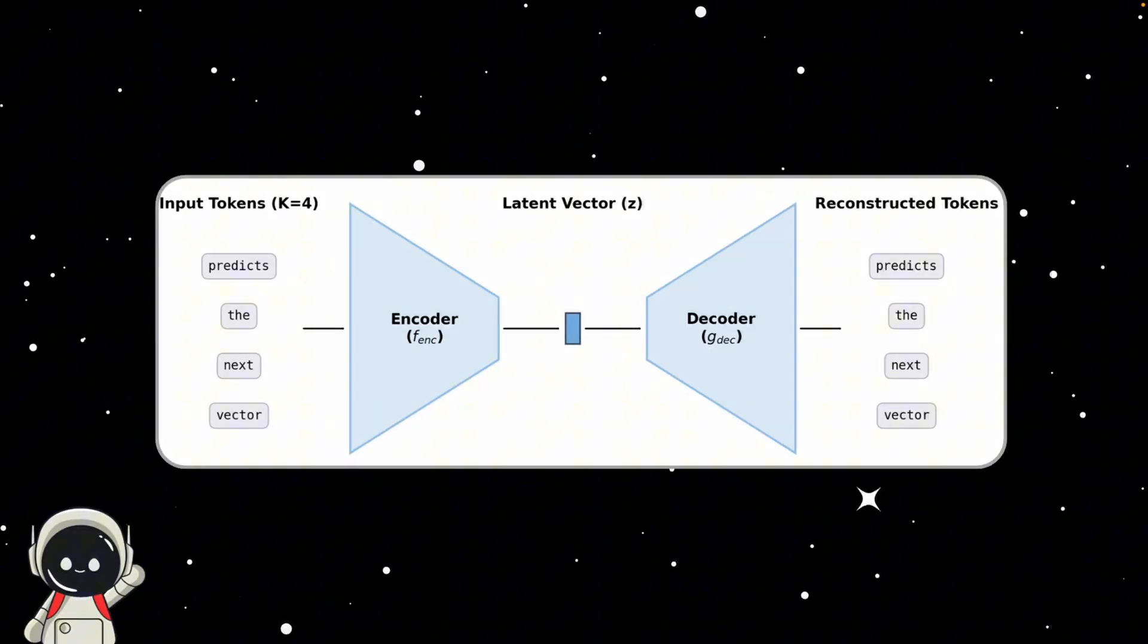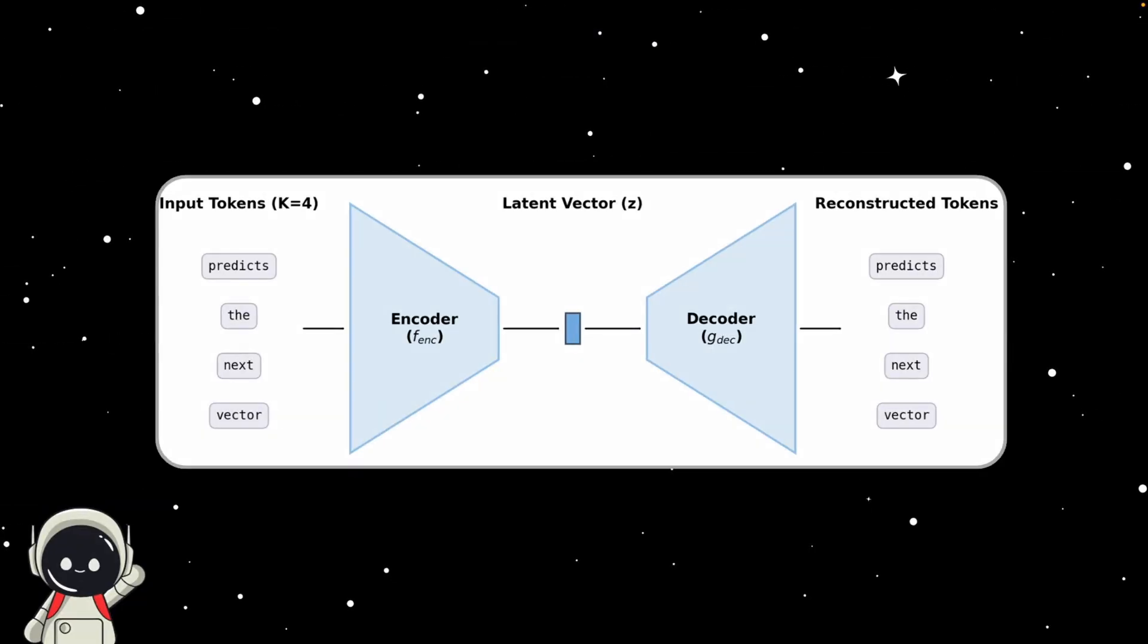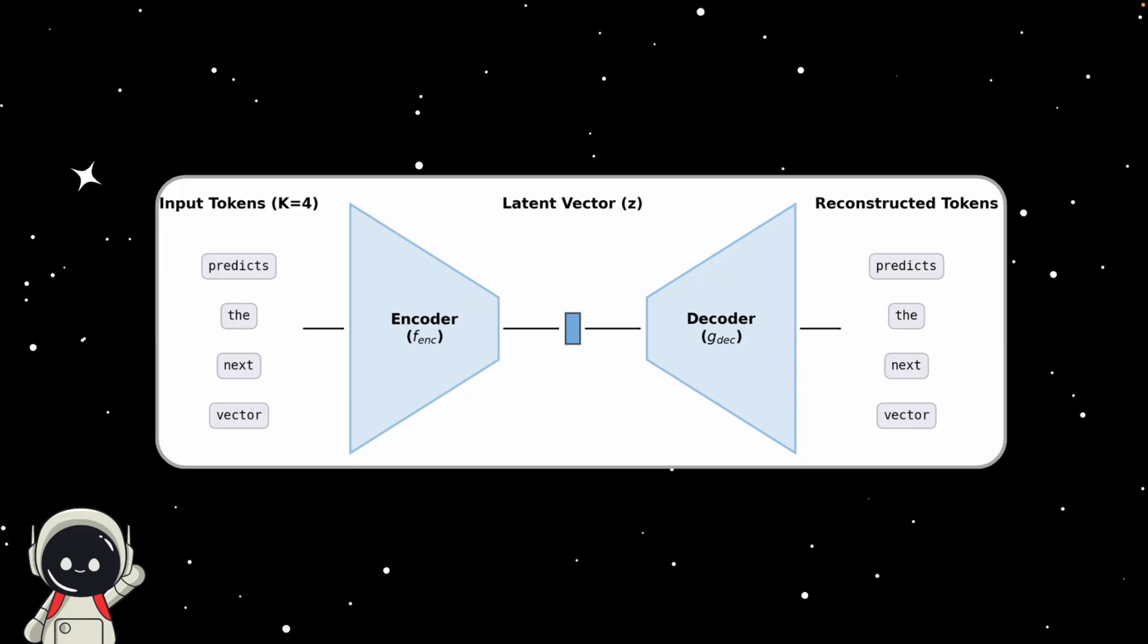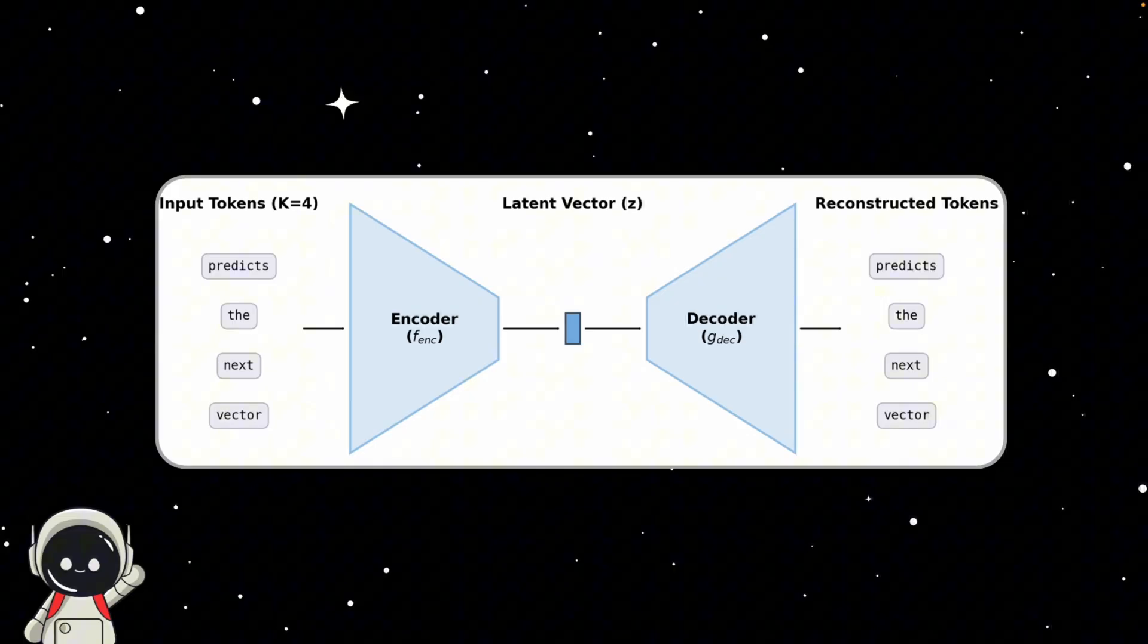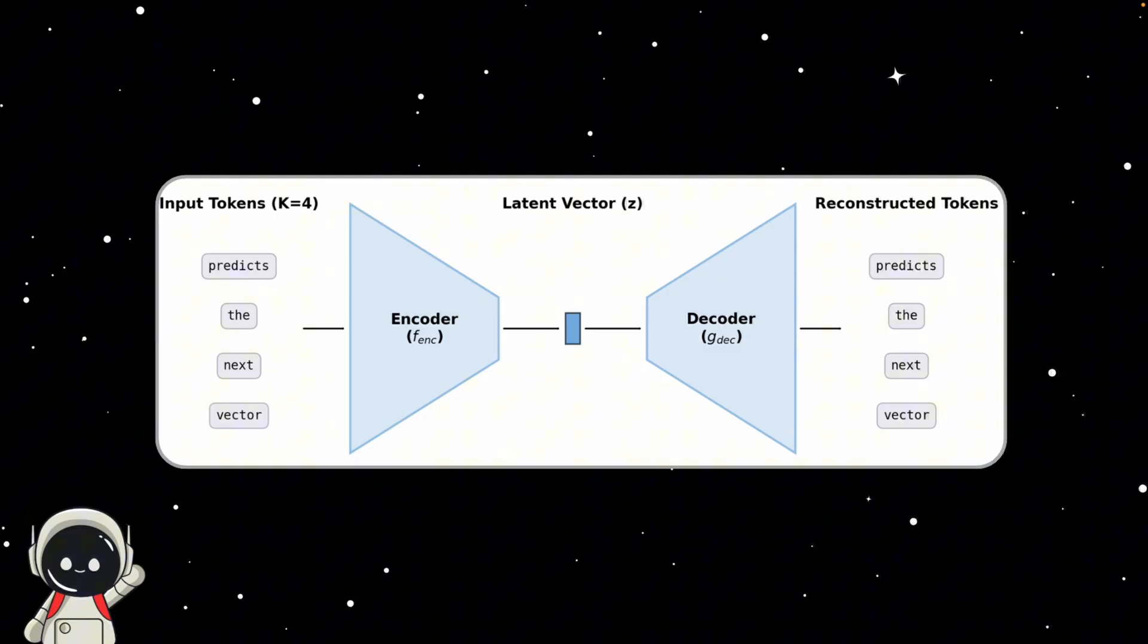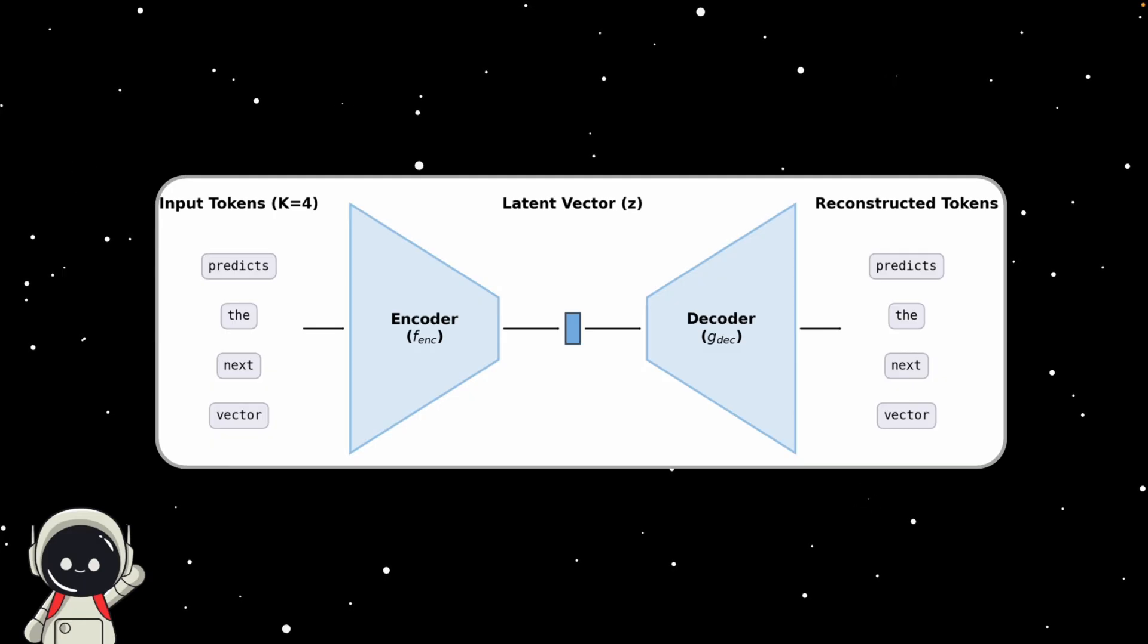To make this happen, CALM uses something called an autoencoder. Think of it as a translator between words and this new meaning vectors. Here's what it does. It takes a small chunk of text, maybe four tokens, and compresses it into a single vector. Then, it learns how to reverse that process and rebuild the original text from that same vector. And surprisingly, it's pretty accurate. The reconstructions hit over 99.9% accuracy.